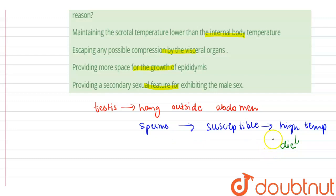They can easily die in high temperature of the abdomen. So in the scrotum, their temperature is lowered to 2 to 3 degrees Celsius.